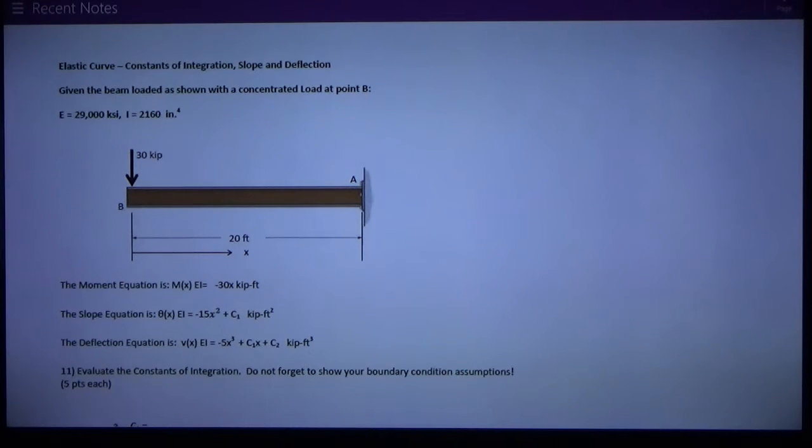So we're given a beam, it's a simple cantilever fixed at point A on the right end, free on the left end at point B, 30 kip loads, 20 foot span, and the problem has developed an X, measured from the left end.